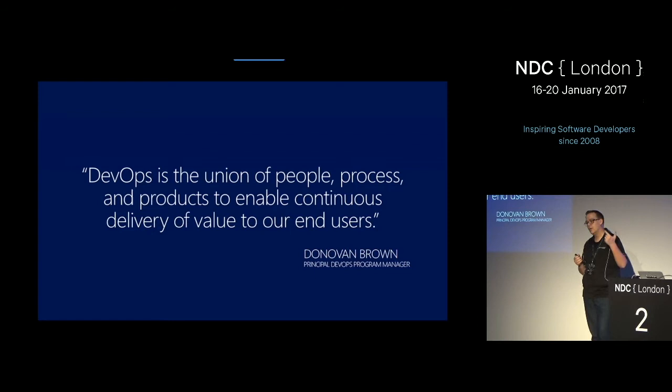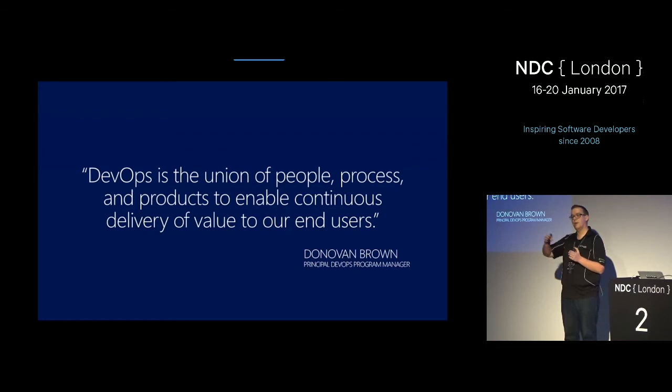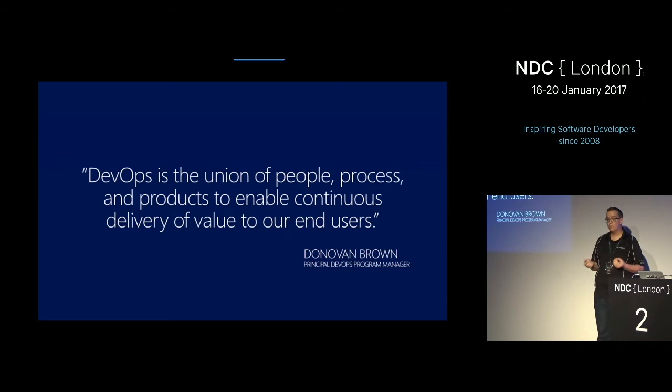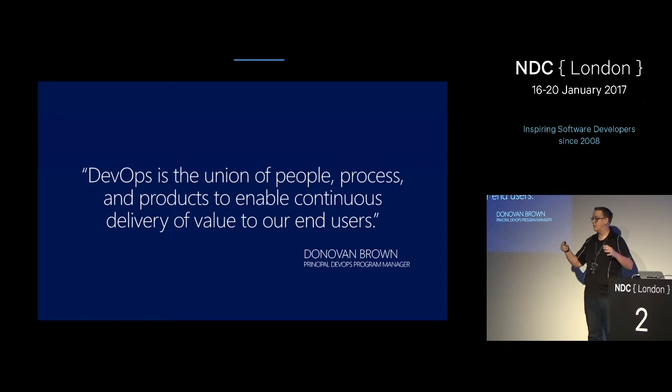What Donovan Brown says is that DevOps is about three things: people, process, and products. Products are tools. You want to use those three as optimally as possible to optimize your process, with the end goal of delivering value to the customer. Automation is important, but it's way more important if your goal is to deliver to the customer as soon as possible. This is the definition we use as the ALM Rangers — we want a continuous flow of value to our customers.